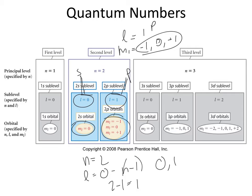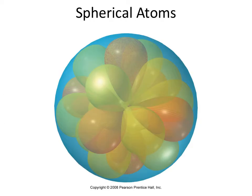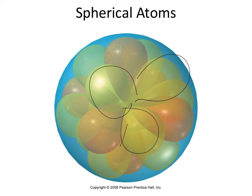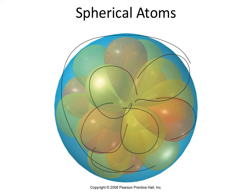You can keep going forward to the third level, where you start getting l equals 2, which is your d orbitals — and remember that in your d orbitals you're going to have five orbitals in different orientations. As for why we call atoms spherical: if you actually start putting all these different orbitals together and compound them, you can see all these individual orbital balloons, and they eventually create something that's a little bit more spherical.